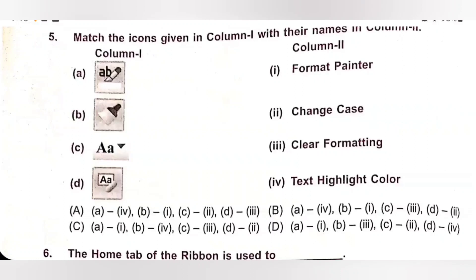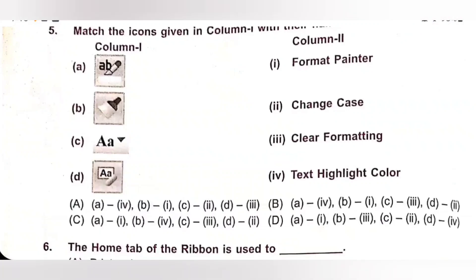Fifth question: Match the icons given in column 1 with their names in column 2. Please pause the video and check the icons. Icon A is Text Highlight Color — A4. Icon B is Format Painter — B1. Icon C is Change Case — C2. Icon D is Clear Formatting — D3. So the matching is A4, B1, C2, D3. Option A is the correct answer.